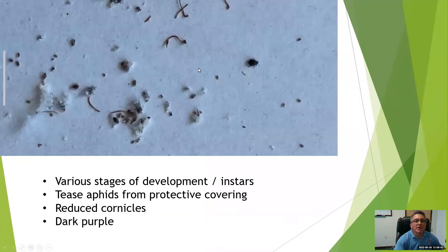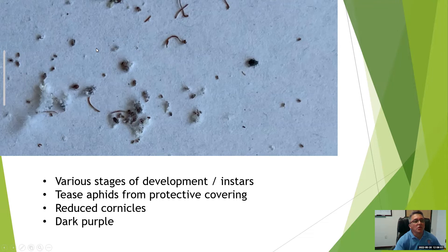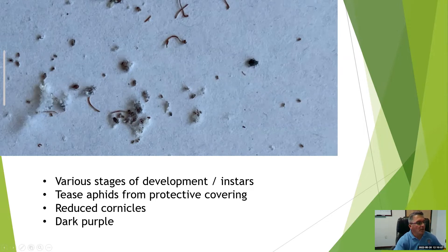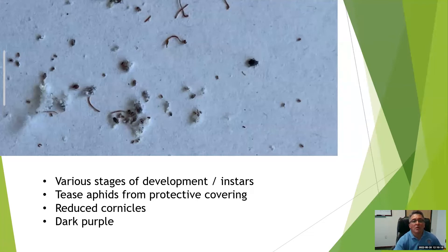I collected some woolly apple aphid colonies and teased out some of the cottony material, exposing these little dark oval-shaped things — these are actually woolly apple aphid immatures, or nymphs. Here's an older instar nymph where you can actually see the legs. Underneath that massive wax is actually the animal. They typically are a darker color, almost purple — if you squish them, they'll stain your fingers purple.